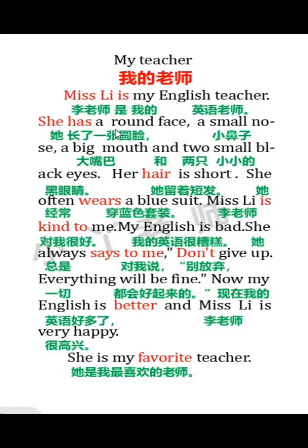这是一个含有be动词的句子，我们称为静态句，用来描写人物的外貌特征。第二个句子用主语加动词再加名词短语，通过动态来描写人物。这两个句型都是描写人物的常用句型。Her hair is short — 她留着短发。hair是不可数名词，所以be动词用is。